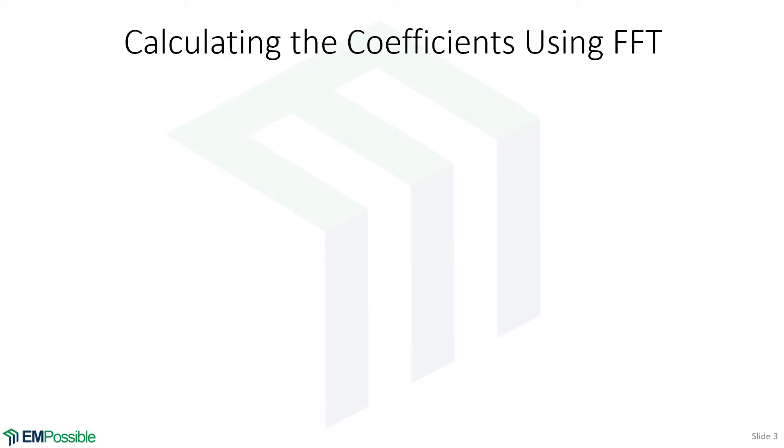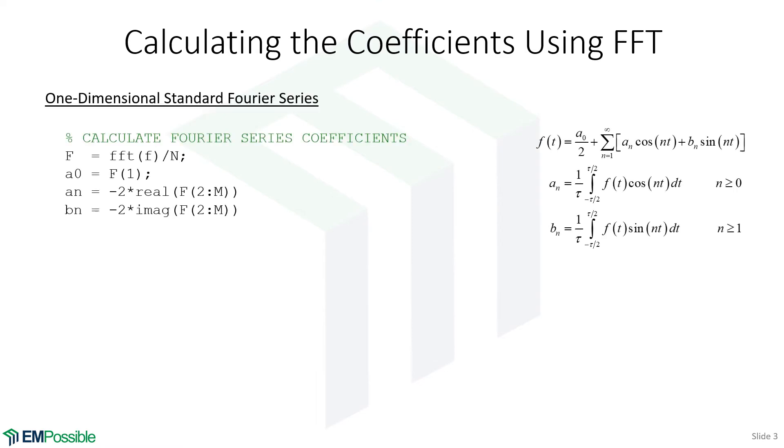So it turns out we don't have to calculate those integrals numerically. We can just use the FFT and it's very fast and simple. Let's first look at the one-dimensional standard Fourier series. Just for convenience, I've copied the equations over here on the right. So in MATLAB, we will first calculate the FFT of a function, divide by the number of samples, and that gives us true Fourier coefficients in this array F.